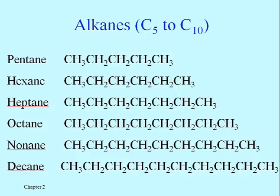Those first four you need to know, and you also need to know these alkanes with five up to ten carbons — their names identify them as having those particular numbers of carbons. Pentane, just like a pentagon has five sides, has five carbons. Hex is the term for a six-carbon molecule, just like a hexagon has six sides — hexane has six carbons.